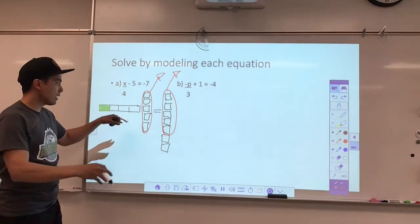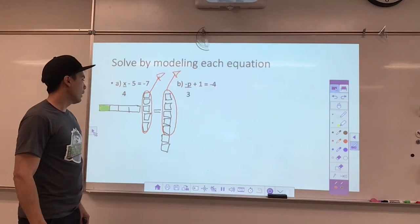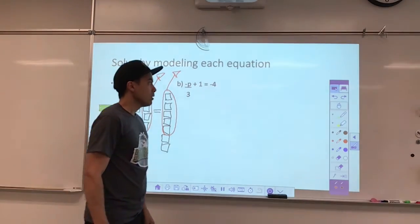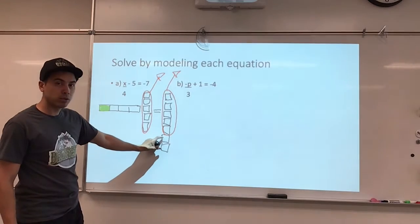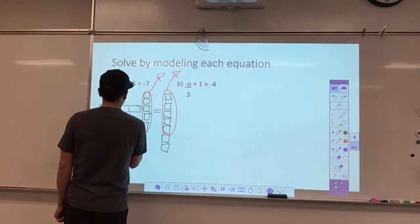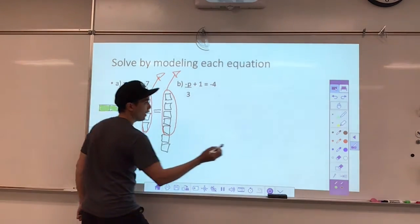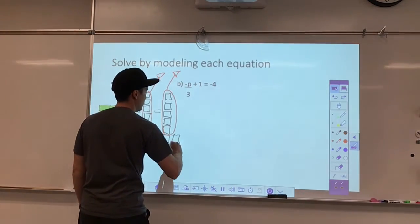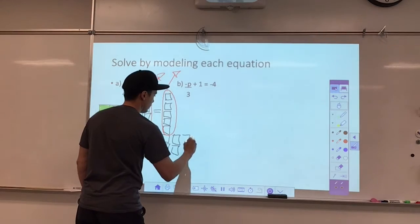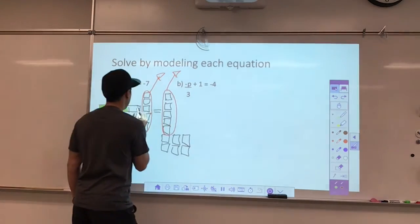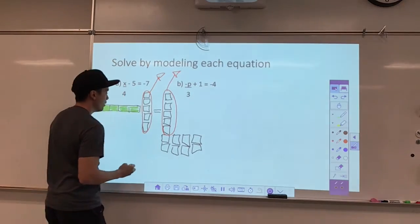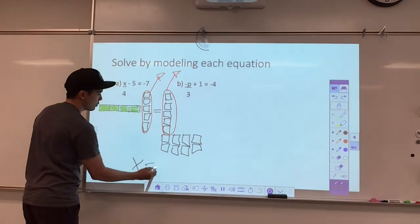Once I get rid of those, I have x over 4 is equal to negative 2. That little chunk here is worth negative 2, so if I fill in another little piece, that gives me another negative 2. For every little chunk I fill in, that's going to give me another set of negative 2. After doing a fourth one, I see that x is worth negative 8.